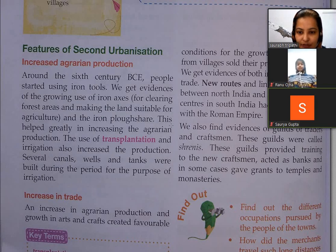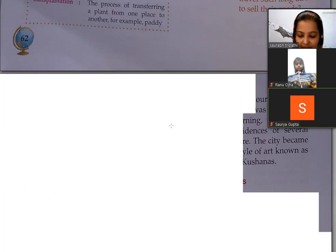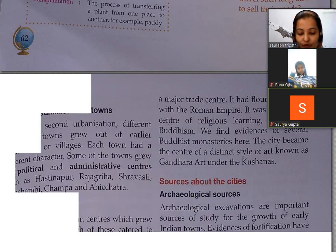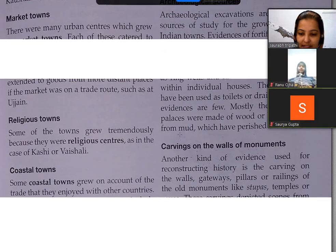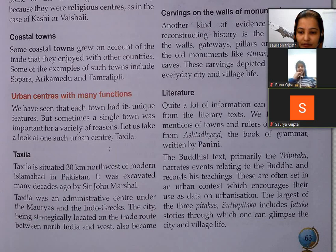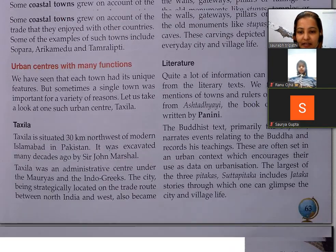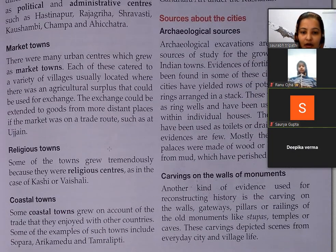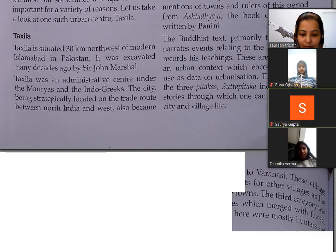The features of second urbanization covered previously include: increased agrarian production, increase in trade, and the types of urban centers — market towns, religious towns, coastal towns, and urban centers with many functions. Taxila and archaeological sources have already been covered.